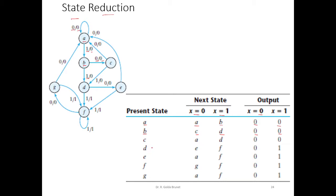Once we have this table, we can inspect the rows and find out the equivalent states. Two states are said to be equivalent if for all inputs they have the same transitions and the same output. For example, consider states E and G. From E, if we get a 0 as input we go to state A. Similarly, from G upon input 0 we also go to state A, and the output is 0 in both cases.